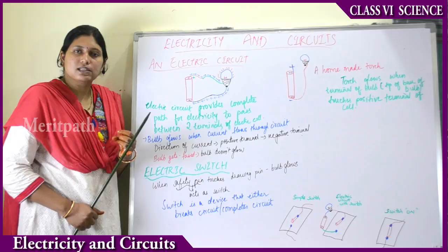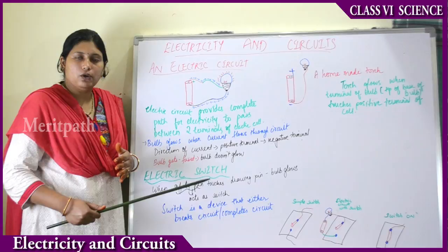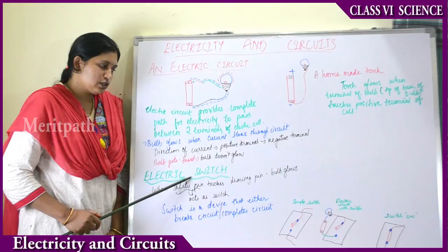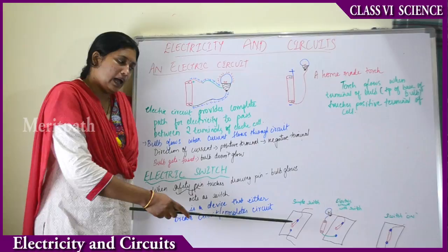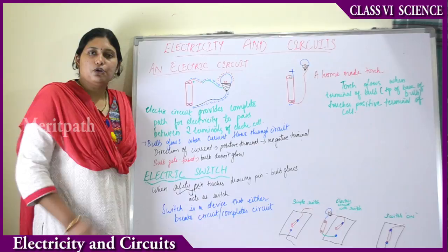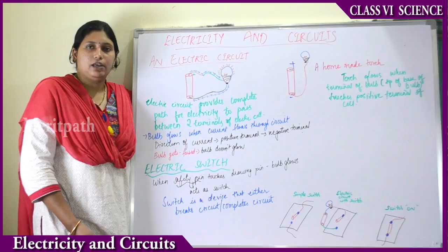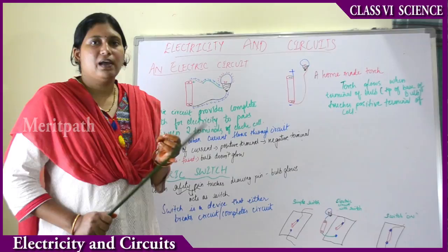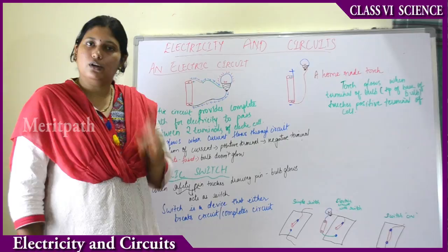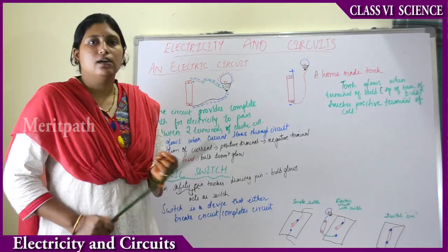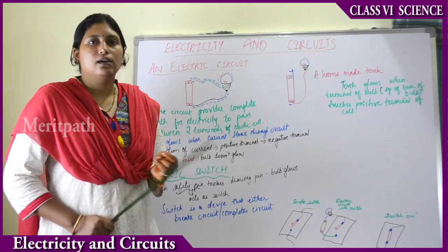A switch is a device that either completes the circuit or breaks the circuit. Whenever you turn on the switch, the circuit gets completed and the bulb glows. Whenever you turn off the switch, the circuit breaks. In our houses, every switch on its back side has two screws to which wires are fixed. The upper wire, called the live wire, is always fixed. The other wire is the neutral wire. Whenever you turn on the switch, both wires touch each other, there is a flow of electricity, the circuit completes, and the tube lights, bulbs, fans — whatever it is — work. That is how an electric switch works.